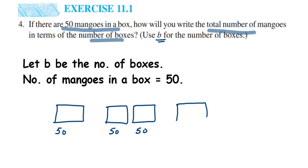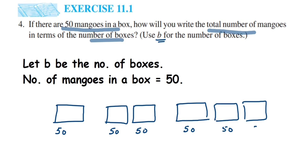Suppose there are three boxes — first, second, and third — each containing 50. Let's make a pattern: one box gives 50; two boxes gives 50 plus 50, which is 100; three boxes gives 50 plus 50 plus 50. You're adding 50 three times. So if there were 100 boxes, you'd have to add 50 a hundred times.